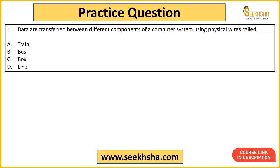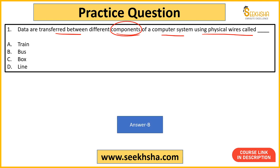Let's start quickly. The first question: data are transferred between different components of a computer system using physical wires called what? Option A: Train, B: Bus, C: Box, D: Line. Even if you haven't studied this before, a little bit of reading is needed. But with NCERT coverage, the answer here is option B — Bus. Bus is basically the lines or physical wires through which data is transferred.